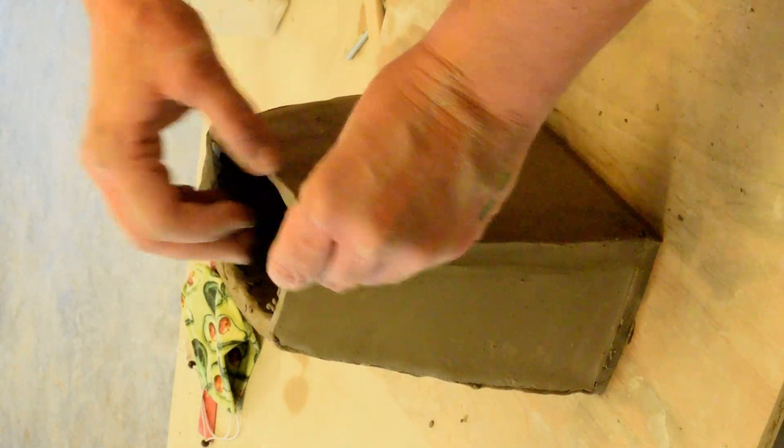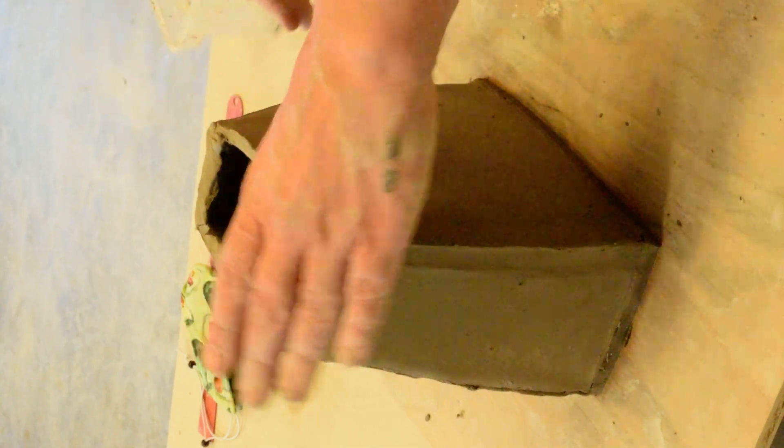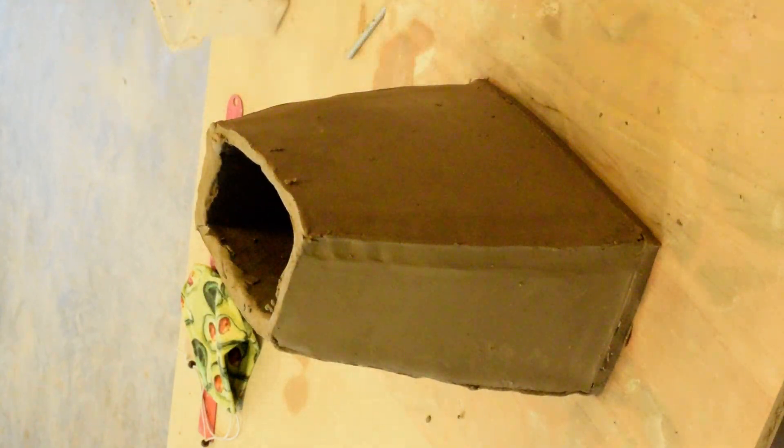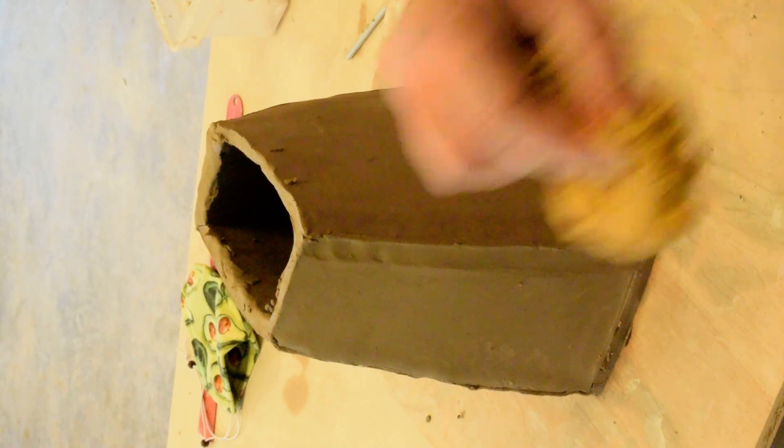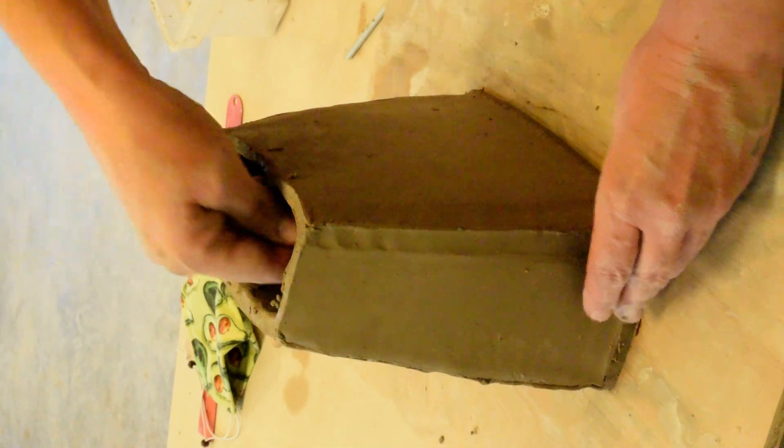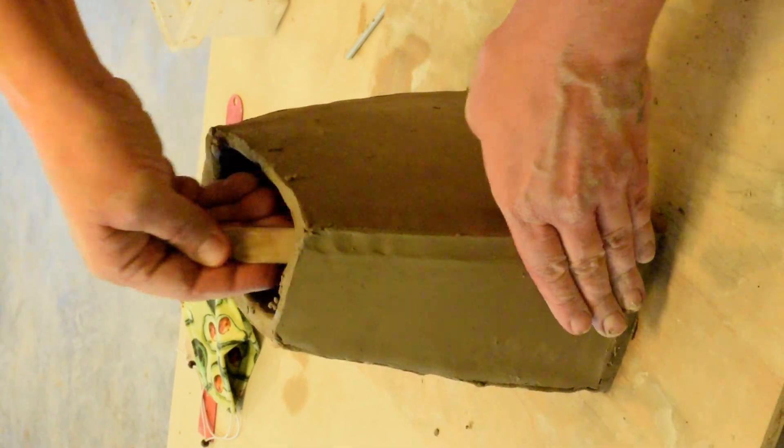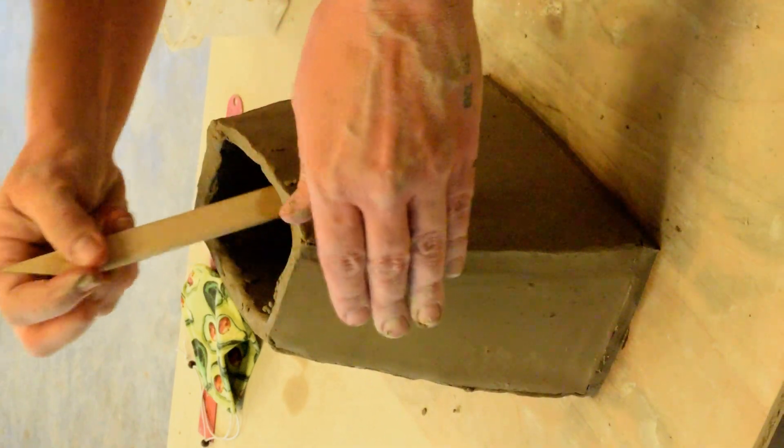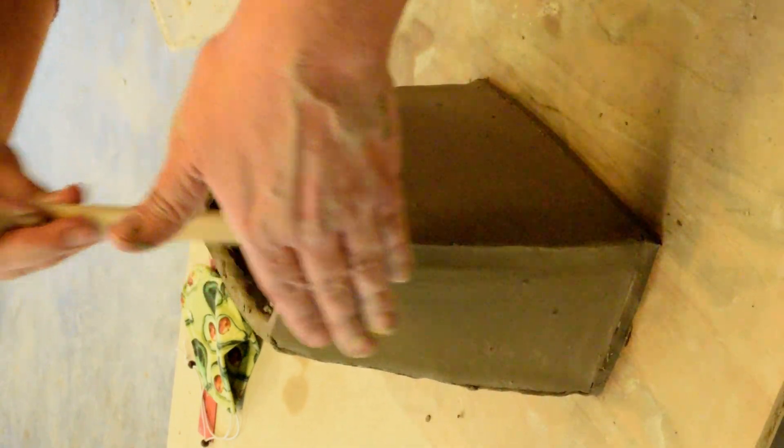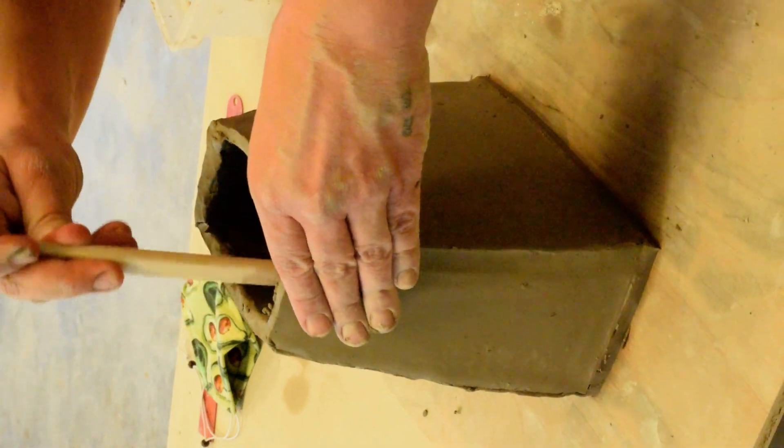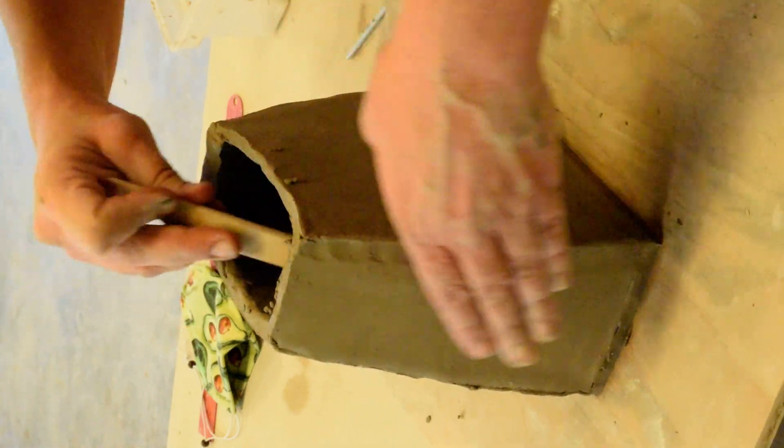And so you can follow that up with your wooden knife, the butt end of it, to really smooth that in there. What you don't want to have is evidence that you've left there that you've done that coil technique.